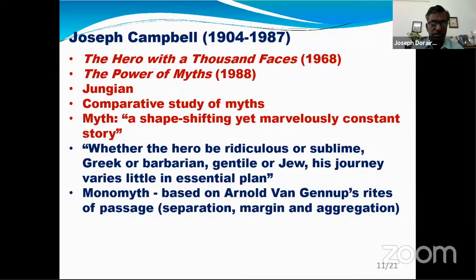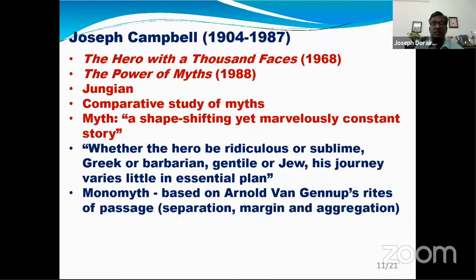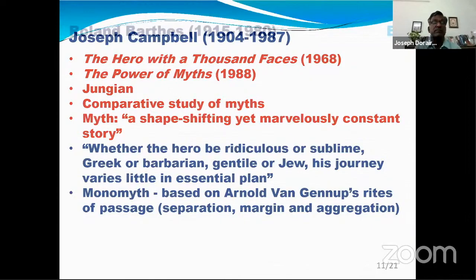The term monomyth was actually coined by James Joyce in Finnegan's Wake. From an anthropological point of view, Campbell's monomyth is based on Arnold Van Gennep's Rites of Passage — later developed by Victor Turner — which identifies three stages: separation, margin (or liminality), and aggregation. Campbell argues that fundamentally, deep down, all myths are the same, differing only in details. Structurally, they are one and the same.